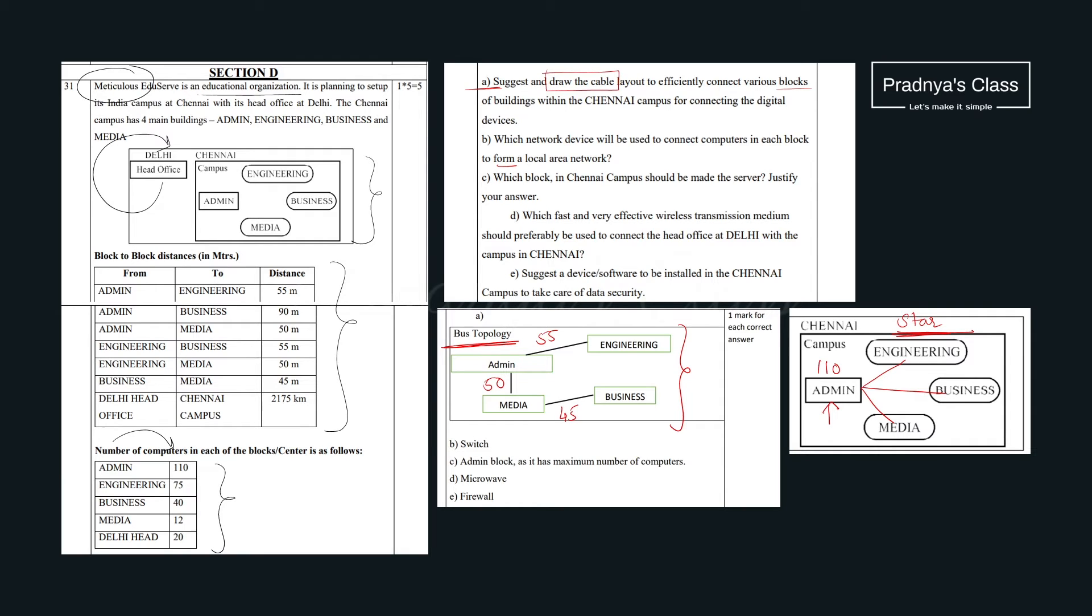Suggest and draw the cable layout efficiently to connect various blocks of the Chennai campus. There are different topologies, out of that you can suggest anyone. If we go ahead with bus topology, it is depending on the distance between the blocks. Try to find out the minimum distance between these blocks and connect it. The second choice we can go ahead with the star topology. I would suggest always to go with star topology. It is based on the number of computers in each block. Whichever block has maximum number of computers, we will make it as a server. And other blocks we will connect to it. Look at the table, here admin block is having 110 computers. So it will act as a server and other blocks will get connected to it. So without thinking much, always go with star topology.